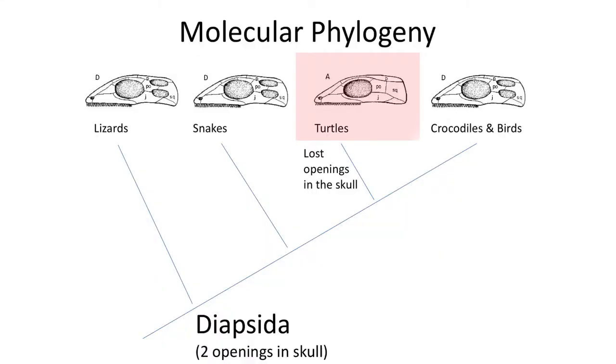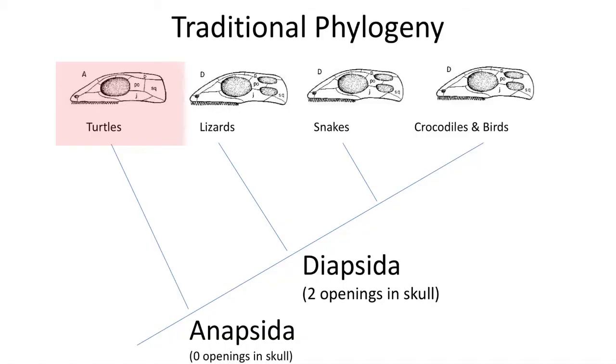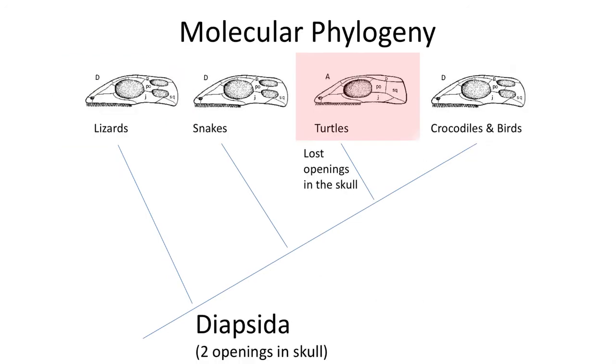However, in the late 1990s, several molecular phylogenies suggested that turtles were more closely related to crocodiles and birds than they were to lizards and snakes. If turtles originated from late Paleozoic anapsid reptiles, then they should be the first branch off the tree with living reptiles, rather than nested within all the other living reptiles like snakes and crocodiles. This made paleontologists start to look more carefully at the anapsid theory of turtle origins.